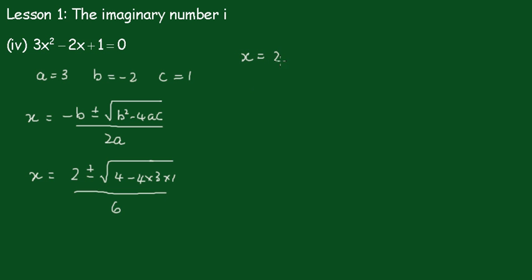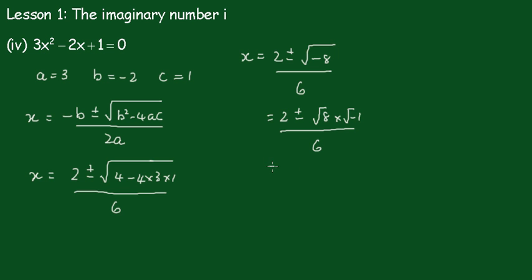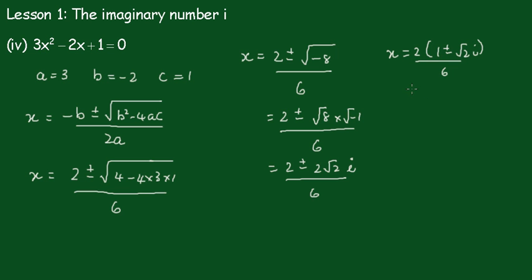So x equals 2 plus or minus the square root of 4 minus 12, which is minus 8, all over 6. That becomes 2 plus or minus the square root of 8 times the square root of negative 1, all over 6, which is 2 plus or minus 2 root 2 i, all over 6. We can take 2 as a common factor, giving x equals 2 times the quantity 1 plus or minus root 2 i, all over 6, which cancels to give a denominator of 3.